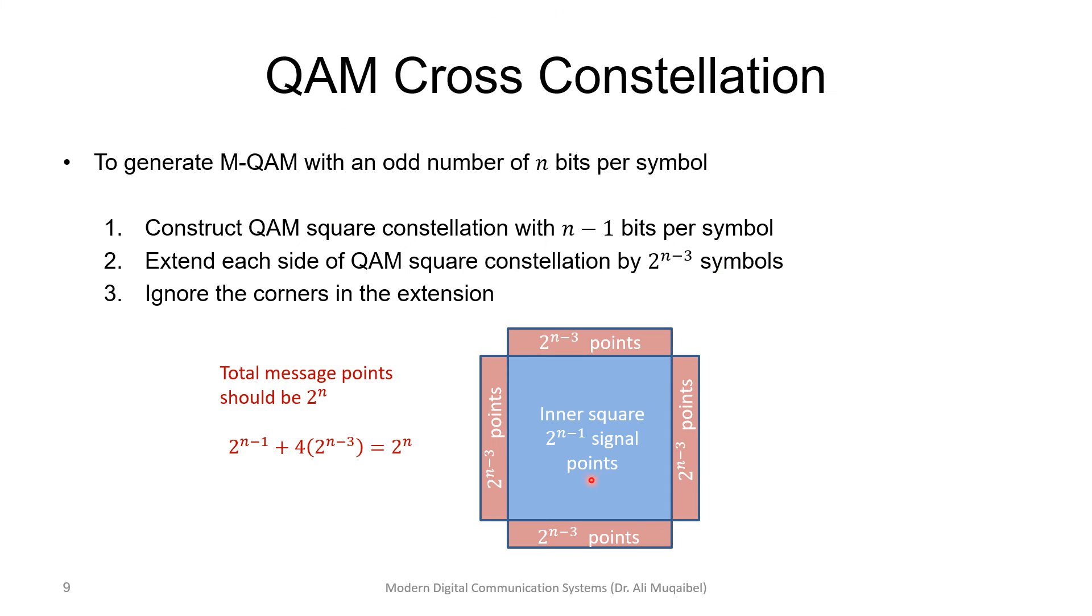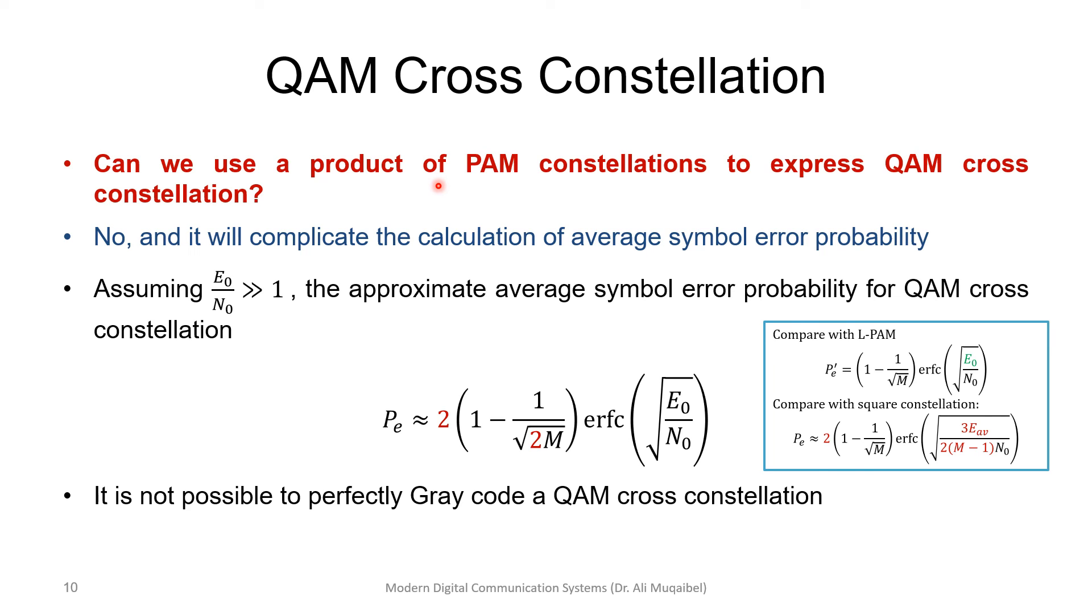This slide shows you how to build QAM for cross-constellation if the number of bits per symbol is odd. Can we use a product of PAM constellation to express QAM cross-constellation? We did that for the square, but for the cross, we cannot do that because it's not direct.